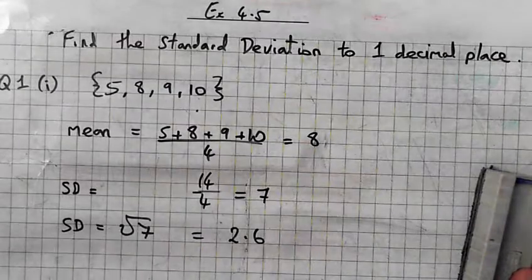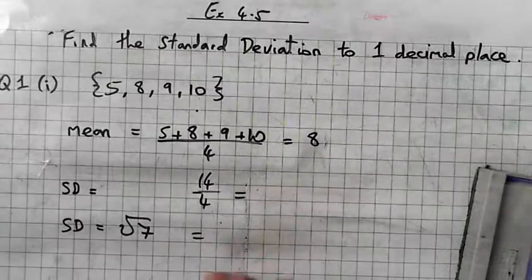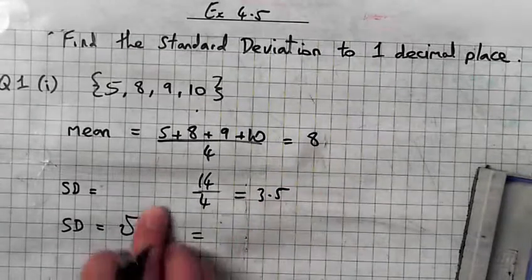14 over 4, oh yes sorry, that's 3.5. Square root of 3.5 is 1.80, so to 1 decimal place, 1.8.